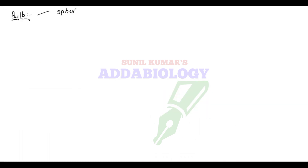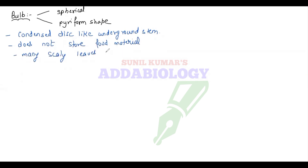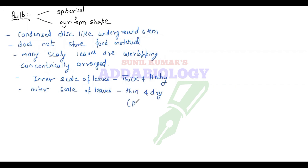The third underground modification is the bulb. It is spherical or pyriform shaped — a condensed disc-like underground stem. It does not store food in the stem itself; rather the stem is reduced to a disc-like structure. Many scaly leaves are overlapping, arranged in concentrically arranged rings like onion. Inner scale leaves are thick and fleshy; outer scale leaves are thin and dry, providing protection. The lower surface shows adventitious roots.